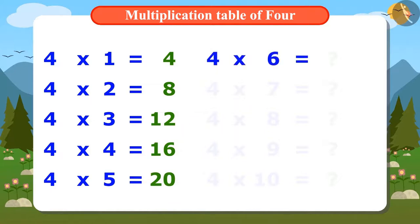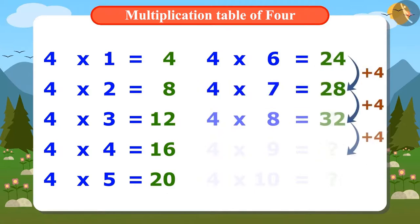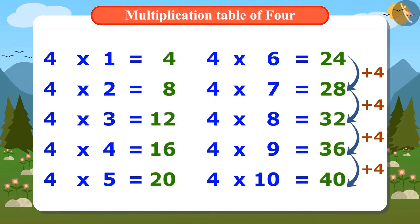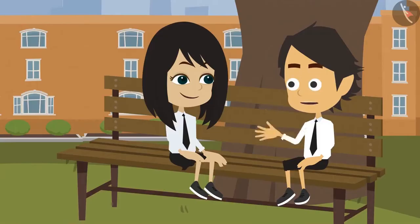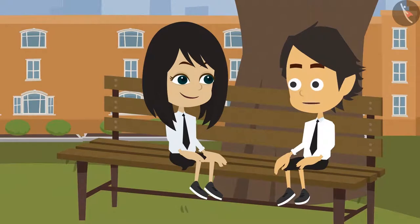In the same way, we can find the next number by adding 4 to 20, that is 24. This way, we will continue to add and we will find out the next number. Now we get to know the whole multiplication table of 4.